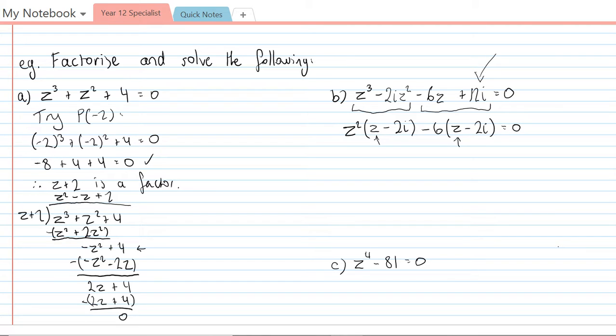And we can see now in that second line that we have a common factor of z minus 2i. So I'm going to take that out as a common factor and I'm left with z squared minus 6.